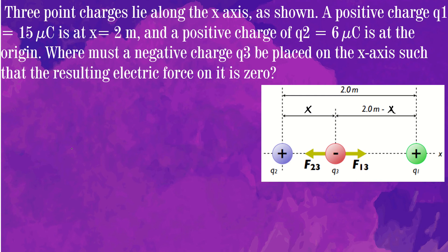Three point charges lie along the x-axis as shown. A positive charge q1, which has a charge of 15 microcoulombs, is at x equals 2 meters, and a positive charge q2 with a charge of 6 microcoulombs is at the origin. Where must a negative charge q3 be placed on the x-axis such that the resulting electric force on it is zero?